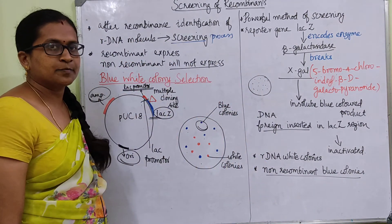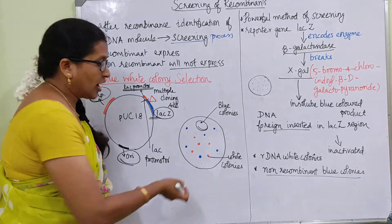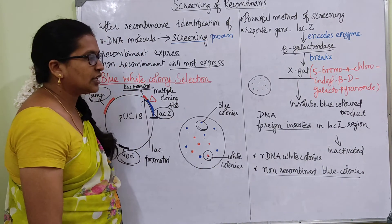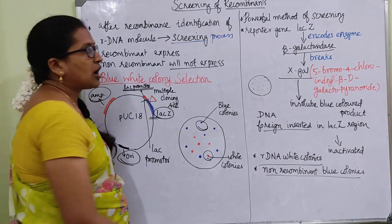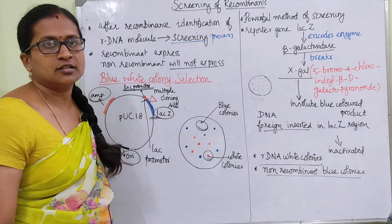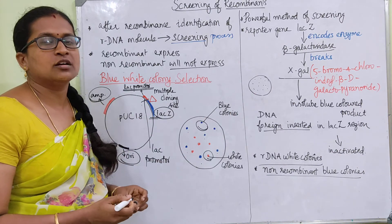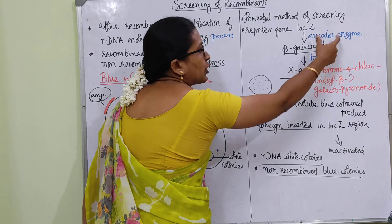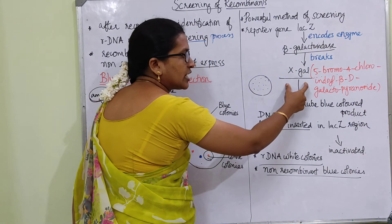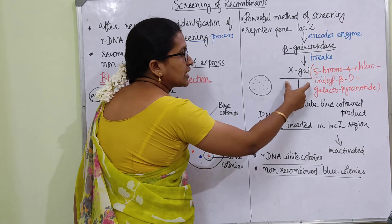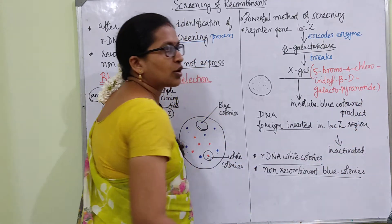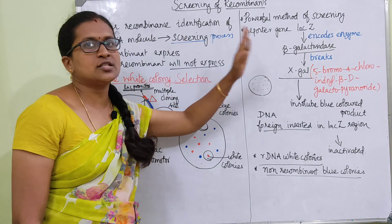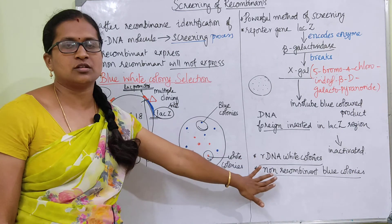Non-recombinants develop blue color colonies because the lac Z produces beta-galactosidase which breaks X-GAL. Recombinants develop white colonies because the foreign DNA insertion inactivates the lac Z, so the X-GAL process is disrupted. The reporter gene lac Z encodes beta-galactosidase, which breaks X-GAL in the synthetic medium — X-GAL being an insoluble blue-colored product. When foreign DNA is inserted, the enzyme process is disrupted.